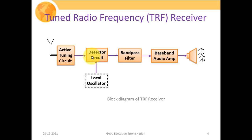Since we are discussing AM receivers, this detector will be any AM detector circuitry, such as an envelope detector, a diode detector, a square law demodulator, or any other specific demodulator. The demodulated signal passes through a band pass filter, and then through a baseband audio amplifier, which power-amplifies the signal to drive the end device such as a speaker.